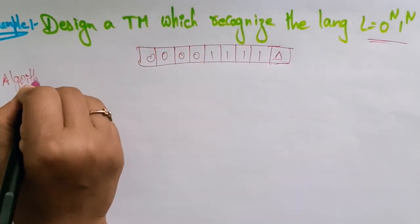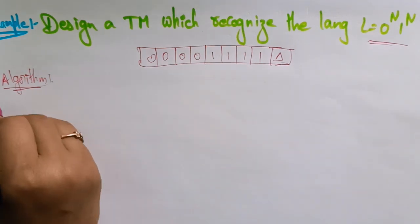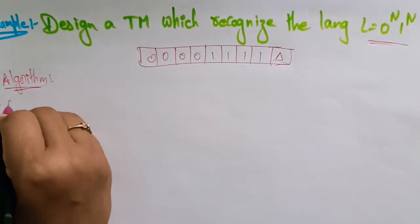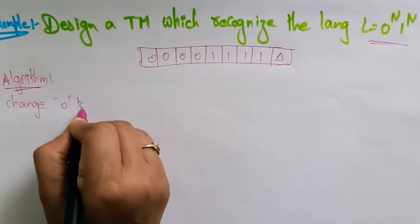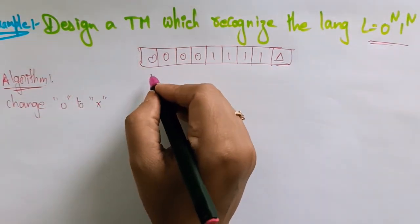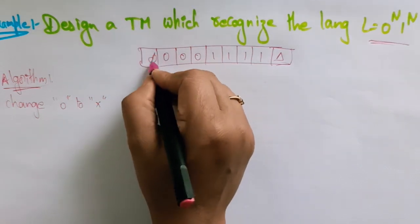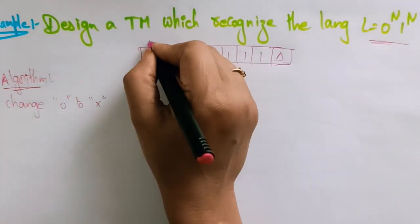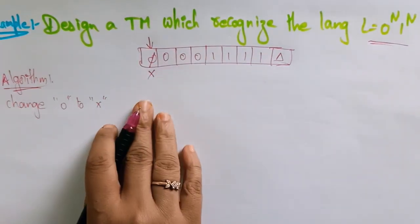Based on this algorithm, I am drawing the Turing machine diagram. First, let me write the algorithm. The first step is: change 0 to x. Wherever the 0 is, that 0 has to be changed to x. Suppose the head position is here at the first 0 — I change that 0 and replace it with x.